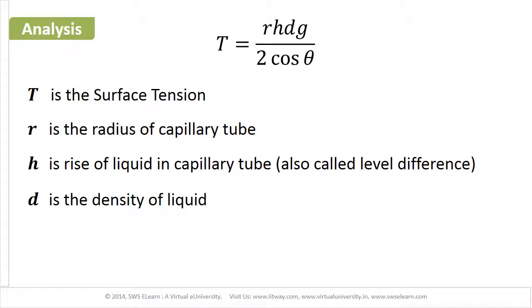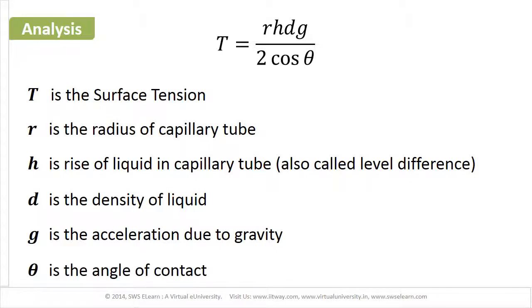D is the density of liquid. G is the acceleration due to gravity. θ is the angle of contact, which is the angle made by tangent to the curved part of liquid surface at the point of contact with the wall of a container.